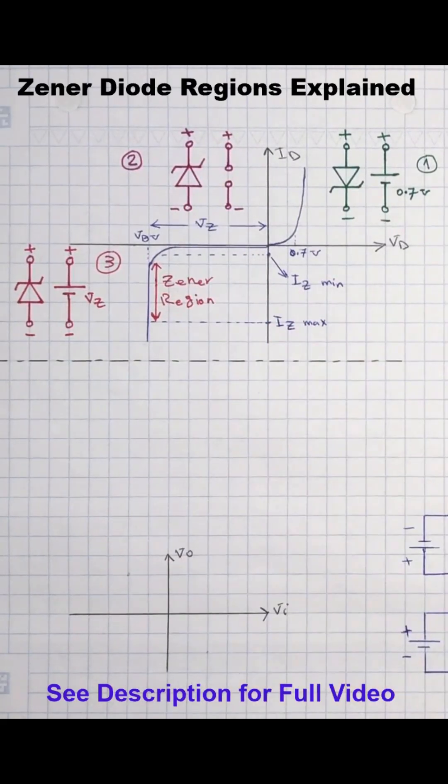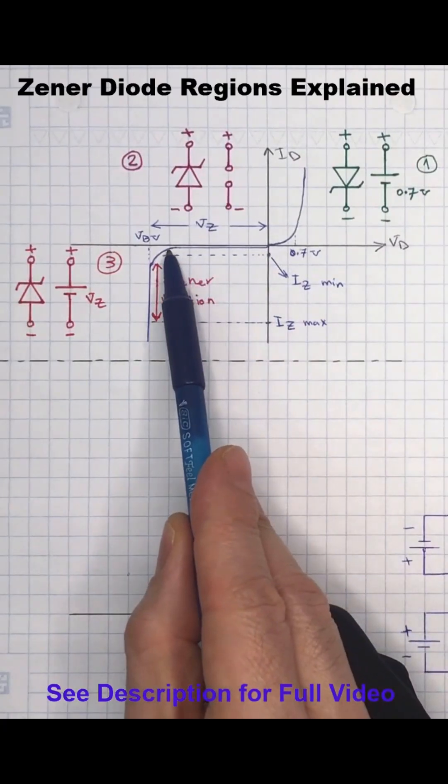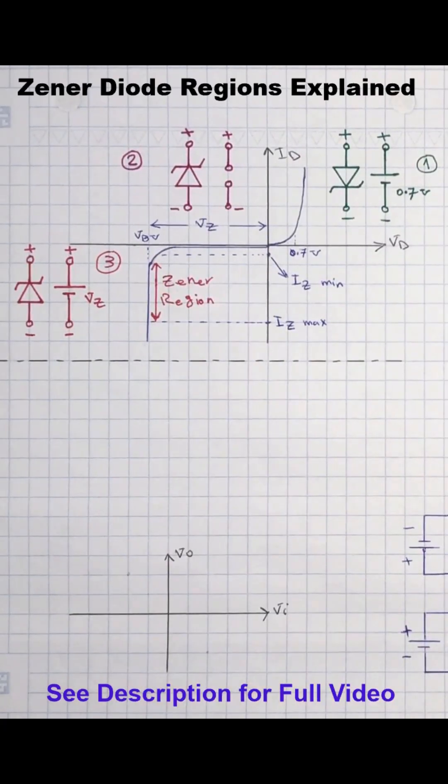In this region the Zener diode will be off and there will be a very small leakage current flowing from cathode to anode. In most electronic applications we neglect this small reverse leakage current.